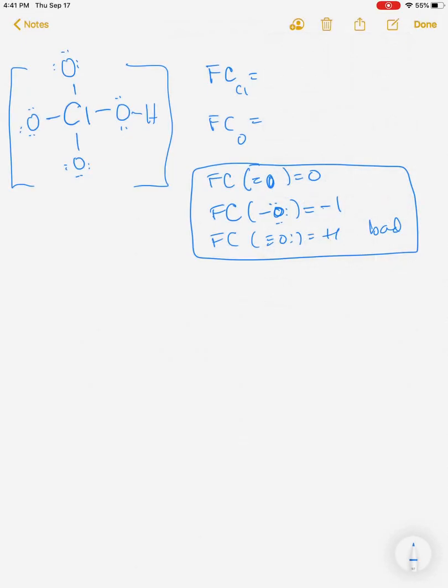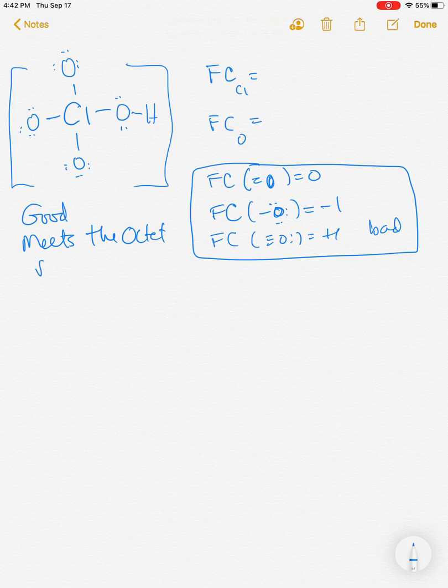Alright, in this video we're going to show you how to take perchloric acid here and turn it into a good structure. This is a good structure. It meets the octet rule and so this is HClO4 and you may see it and may use it. It meets the octet rule.